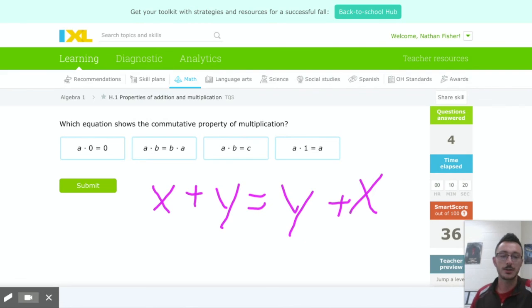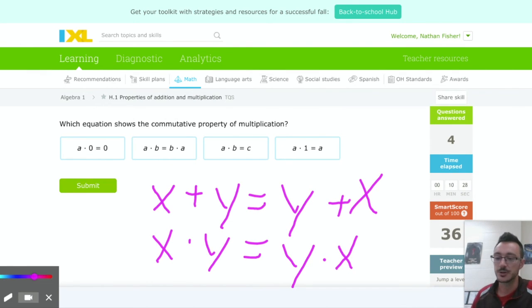An example in numbers or in variables, what that would look like would be x plus y is the same thing as y plus x. The order doesn't matter with addition or with multiplication. Now subtraction and division on the other hand, order does matter. But with these it doesn't. So that's commutative, and that would be this one.